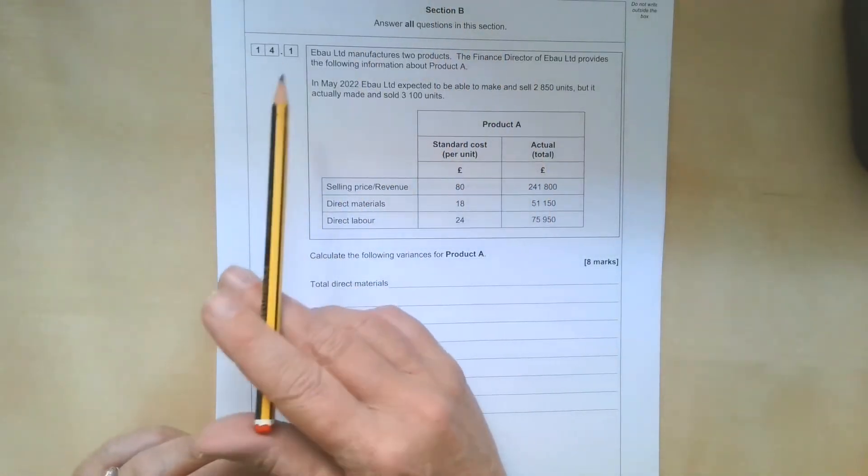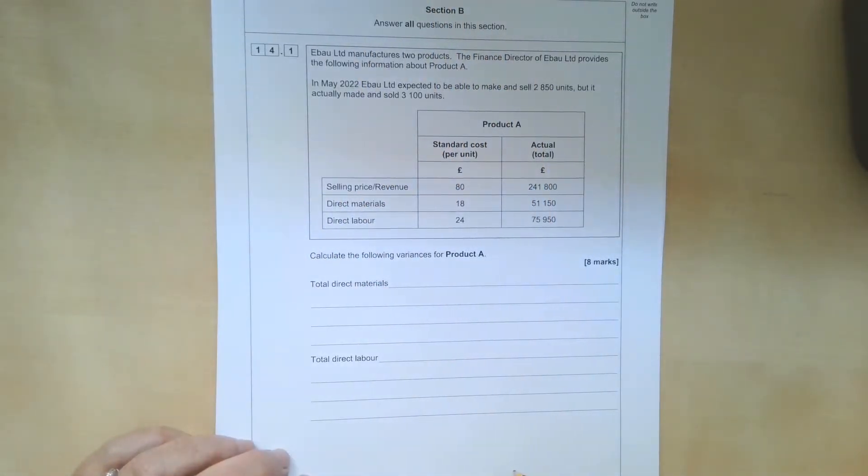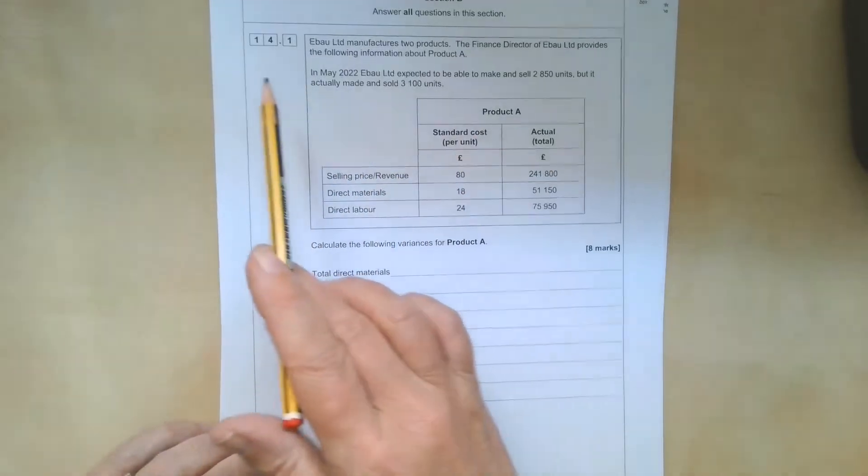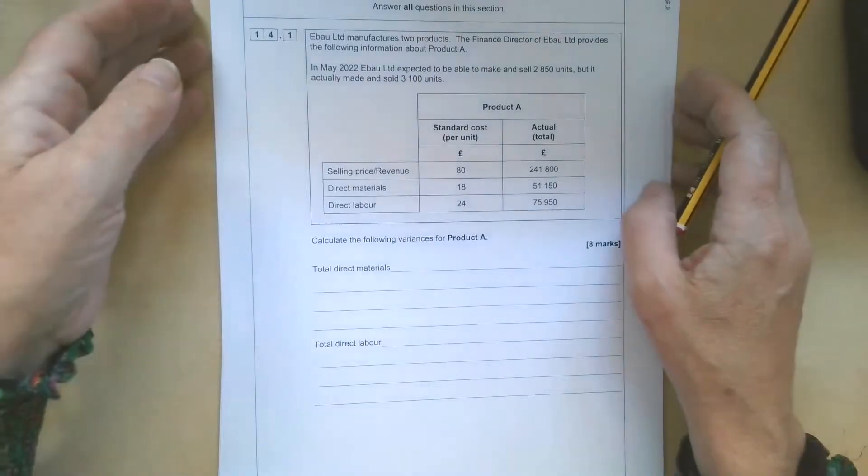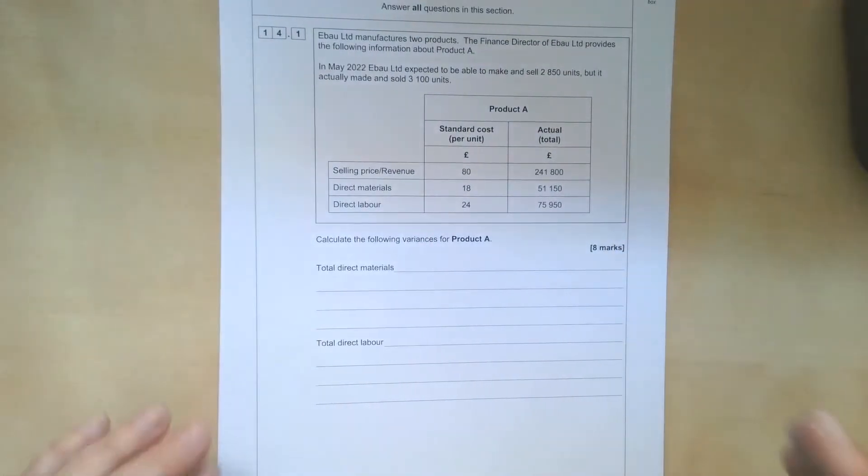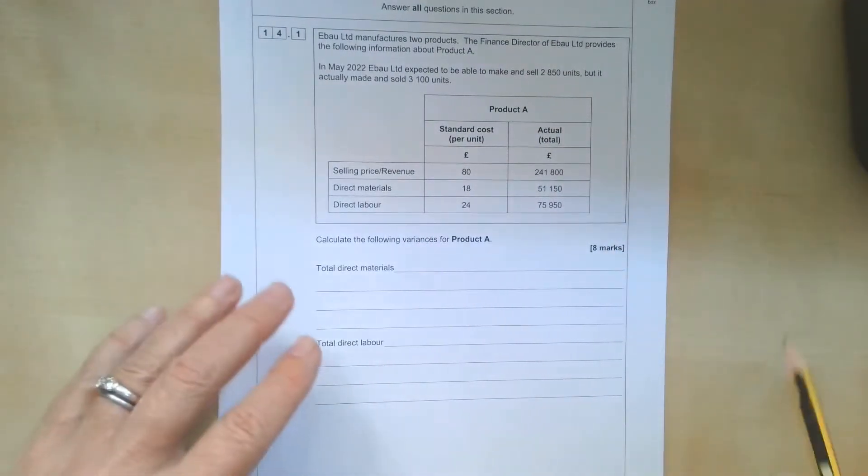On to section B now, question 14.1. This one is about standard costing and variance analysis. Eboo Limited manufactures two products. The finance director provides the following information about product A.